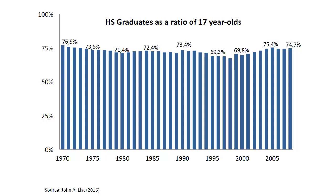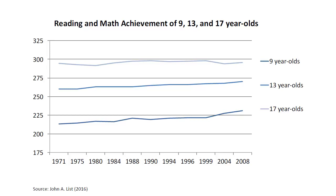An important education outcome in the US is the dropout rate. The US has a relatively large number of students who do not finish high school. The image shows the percentage of high school graduates in the US over our treatment period. It is fair to say that the percentage of high school graduates did not improve over that time period. If anything, the number of high school graduates has decreased — around 77% of students graduated from public high schools in the 1970s, and that same statistic is not even 75% in 2005.